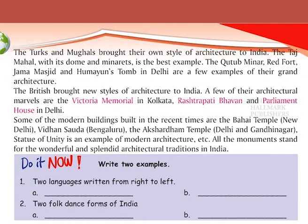The Turks and Mughals brought their own style of architecture to India. The Taj Mahal with its domes and minarets is the best example. The Qutub Minar, Red Fort, Jama Masjid and Humayun's Tomb in Delhi are a few examples of their grand architecture.